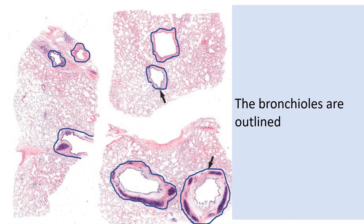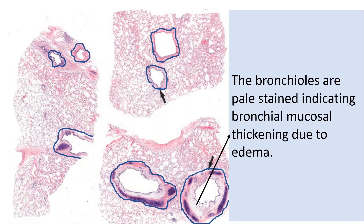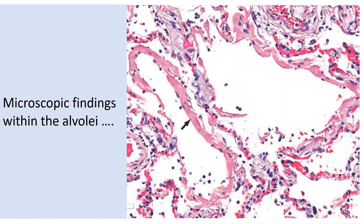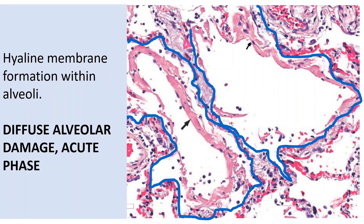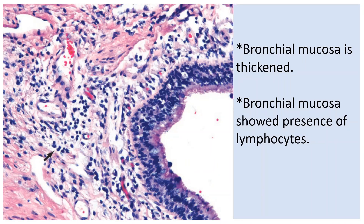These are photomicrographs of the airways. The bronchioles are outlined for better visualization. The lumens of the airways are patent and empty, with no evidence of mucus plugging. The bronchial walls appear pale stained due to edema. Within each alveolus is a pink membrane marked with an arrow. This membrane is formed of fibrin, cellular debris, and few inflammatory cells — these are the hyaline membranes which are the telltale evidence of diffuse alveolar damage, acute phase. The alveolar septal capillaries showed marked congestion, highlighted with yellow arrows. The bronchioles are thickened with marked mucosal edema and presence of mild chronic inflammation predominated by lymphocytes.